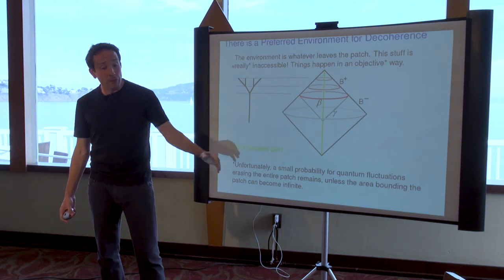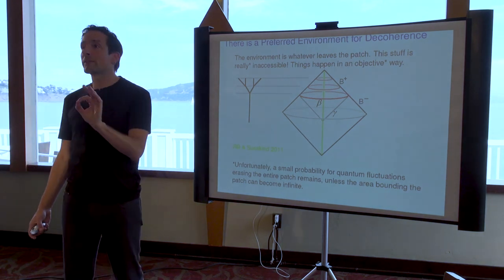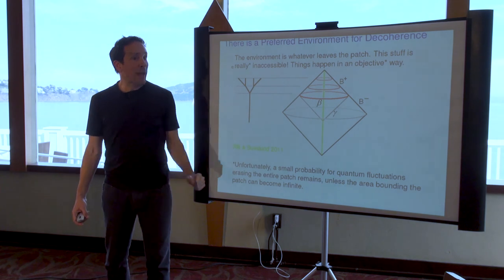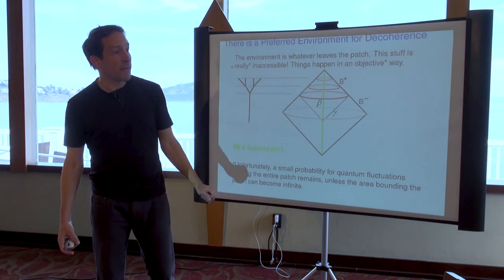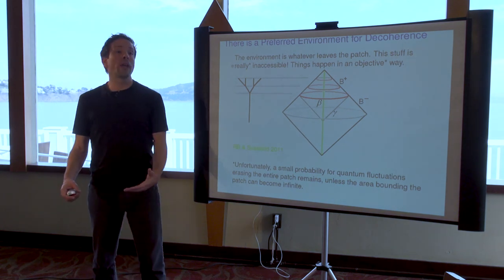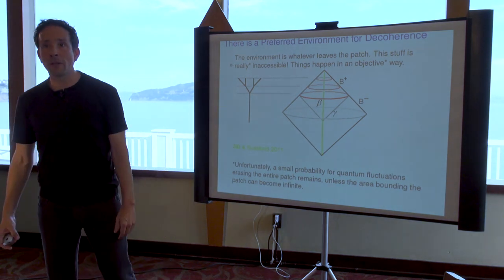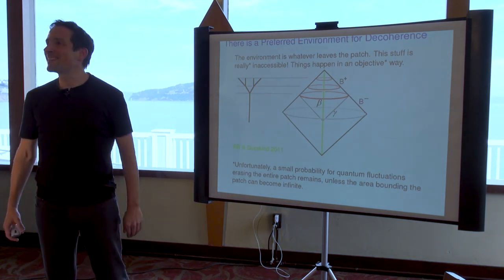And there will be a small probability for even a region as large as the region that we can see of the universe to undergo such strong quantum fluctuations that it makes no longer any sense to speak of this causal patch, that it just disappears. And so at best what we accomplish by this is an extremely accurate but not perfect definition of what happens. I just suspect, personally, that that's as well as we can do unless we happen to live in a universe where we eventually gain access to an infinite space time volume. Thanks very much.